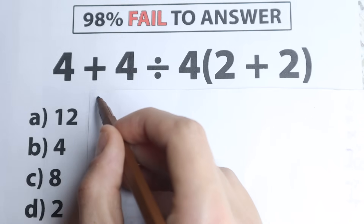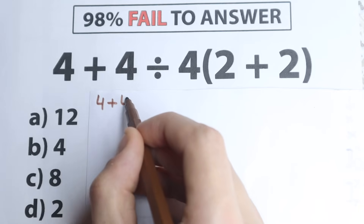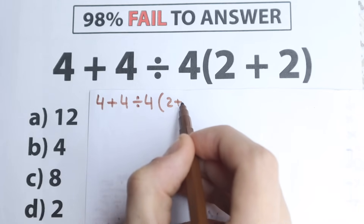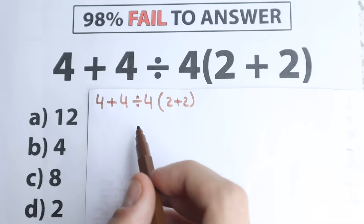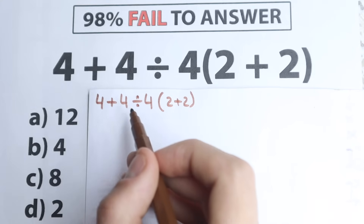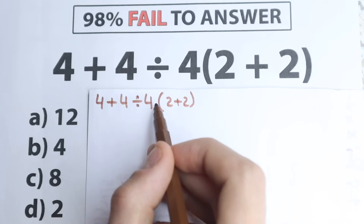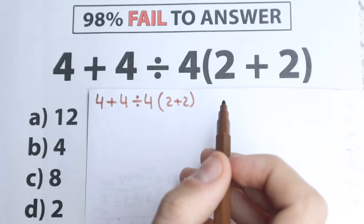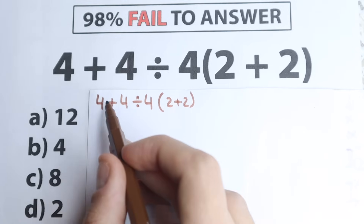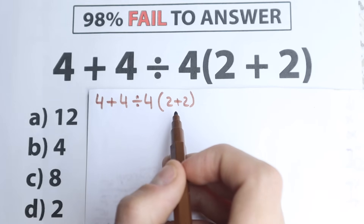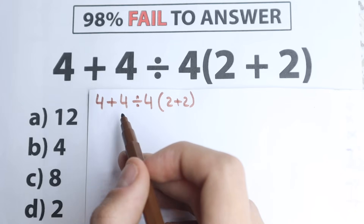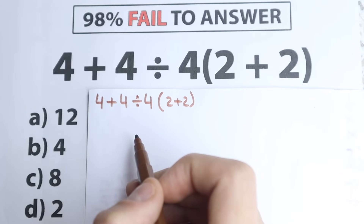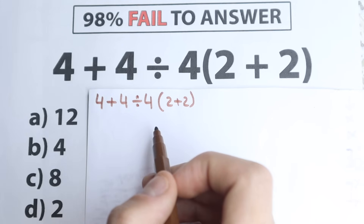First of all I wanted to rewrite this question, so we have 4 plus 4 divided by 4 and in parentheses 2 plus 2. The main question is: what do we need to do first? Do we need to add first, divide first, multiply first, or find the answer in parentheses first? Because we have a lot of combinations — addition, division, multiplication, and addition — and obviously whatever order of operation we select is going to create a different answer. So we need to understand what is the correct order to do this problem.